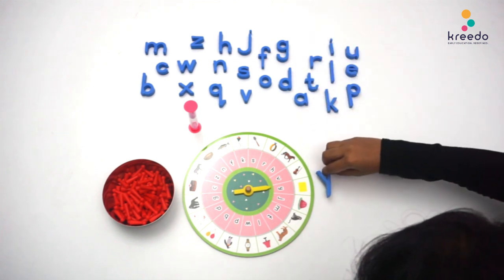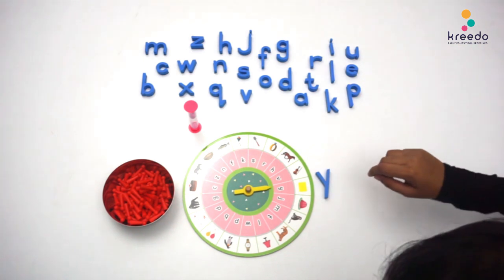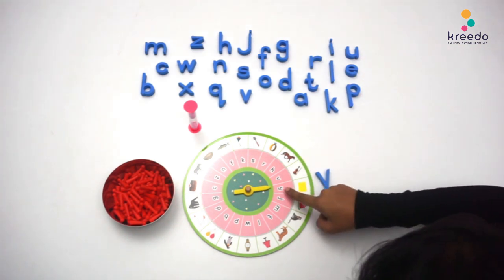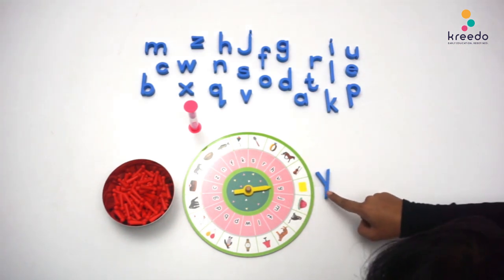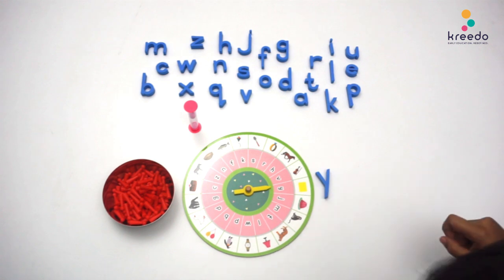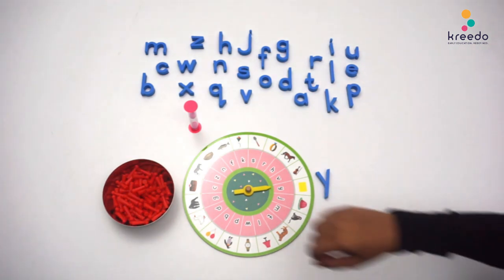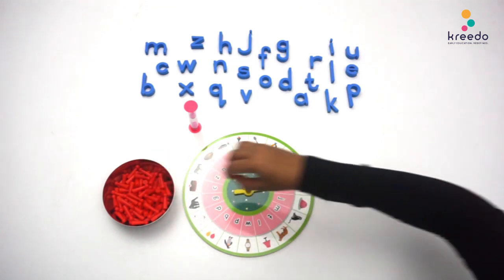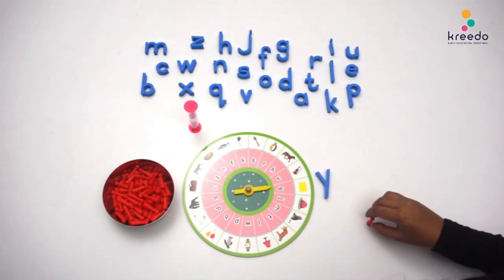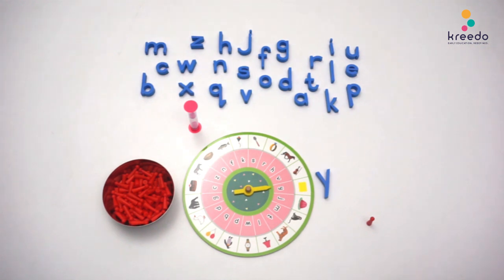The second player matches the sound on the roulette to its letter. The second player picks a skittle, keeps it on his or her side, and keeps the letter back to its place.